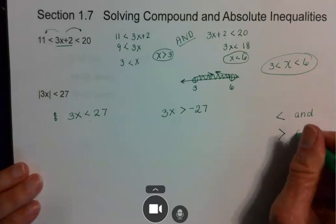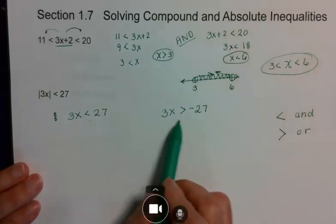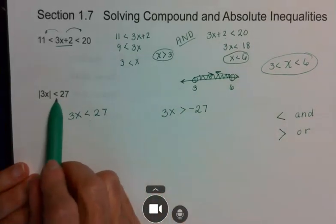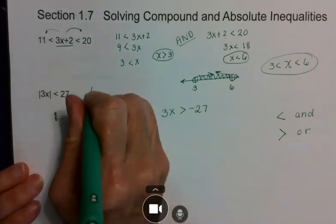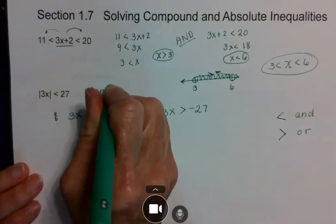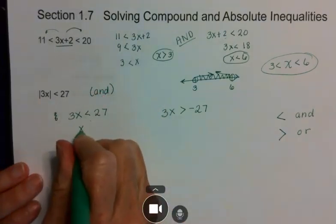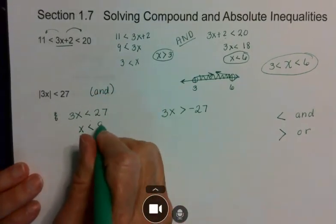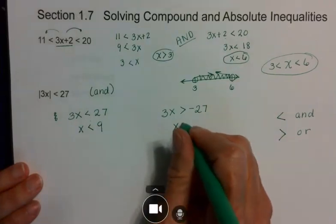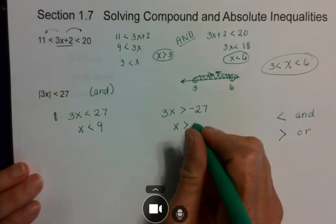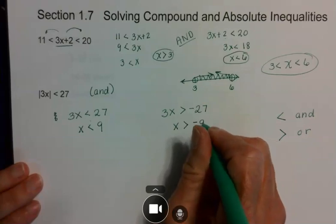Greater than means it's an OR statement. In my original problem, I have less than, so this is an AND statement. When I solve these, I've got x is less than 9, and I've got x is greater than negative 9.